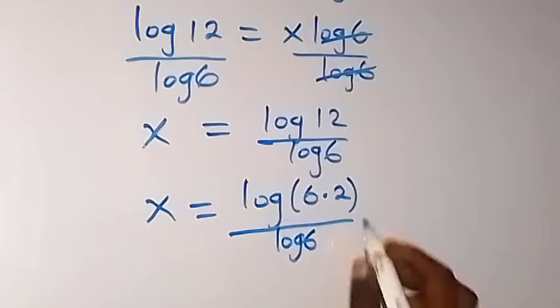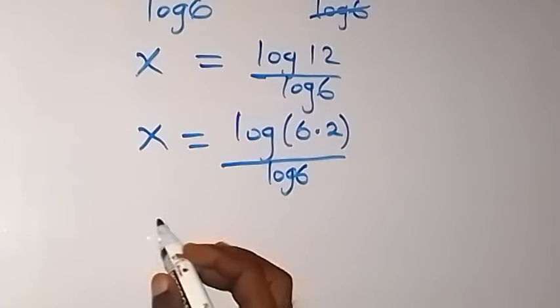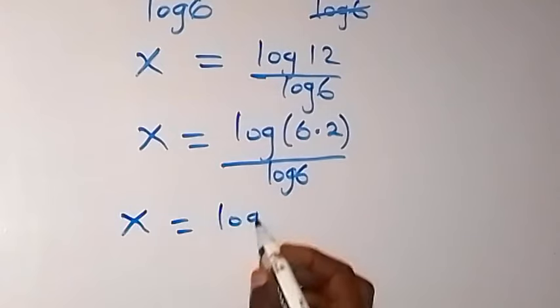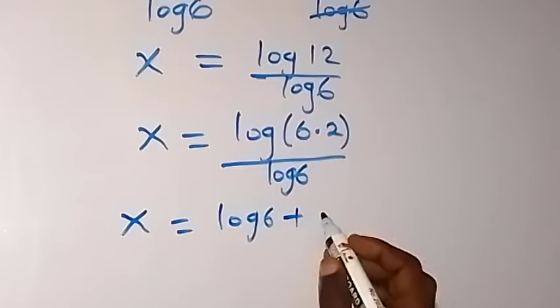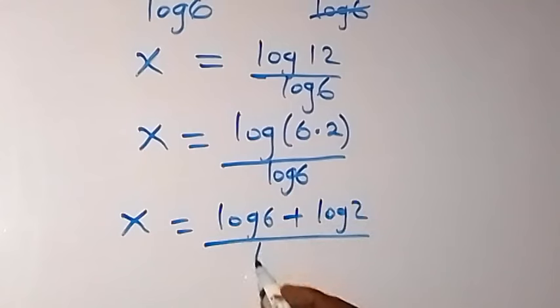Here, we can separate log of 6 times 2 into a sum of two logs. This equals log 6 plus log 2, over log 6.